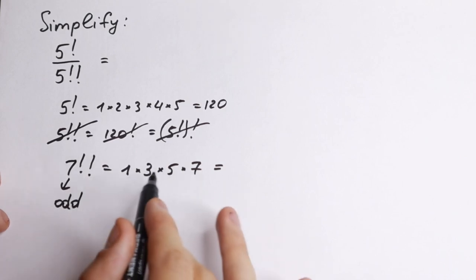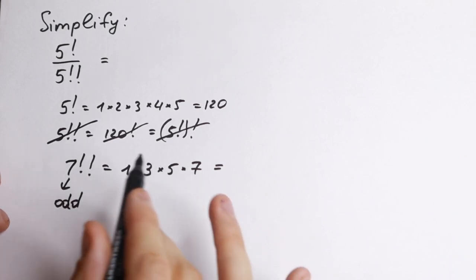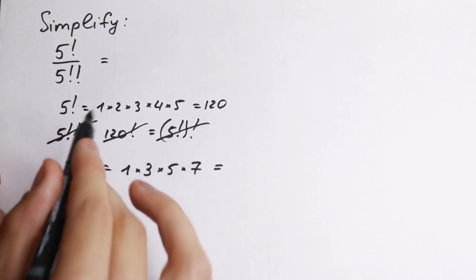So we can easily multiply it. We'll have 15 times 7, I guess 105. But it doesn't matter. We need 5 with double factorial.